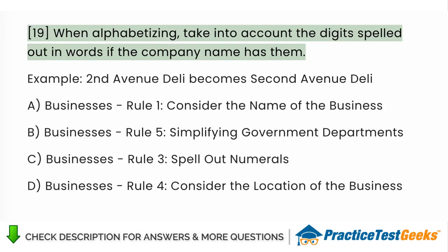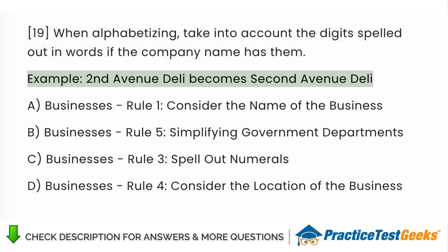When alphabetizing, take into account the digits spelled out in words if the company name has them. Example, Second Avenue Deli becomes Second Avenue Deli A. Businesses Rule 1, consider the name of the business B. Businesses Rule 5, simplifying government departments C. Businesses Rule 3, spell out numerals D. Businesses Rule 4, consider the location of the business